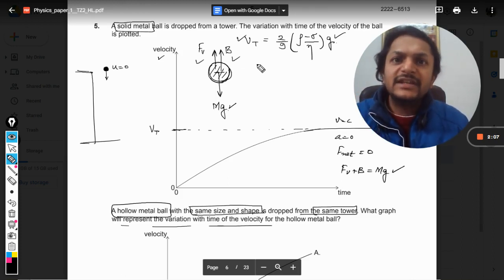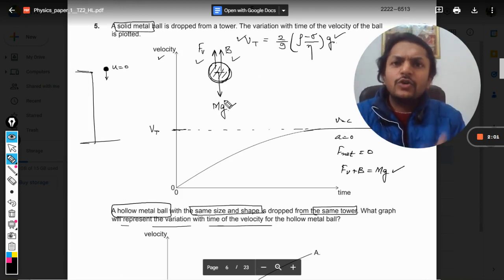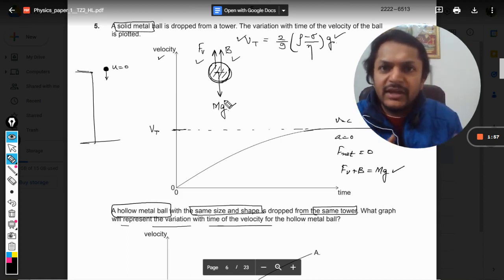F_V will be the same because the size of the ball does not change. B will be the same because the size does not change. But the weight will change. Out of three forces, only the downward force is changing, so obviously the velocity it will be gaining will be lesser.